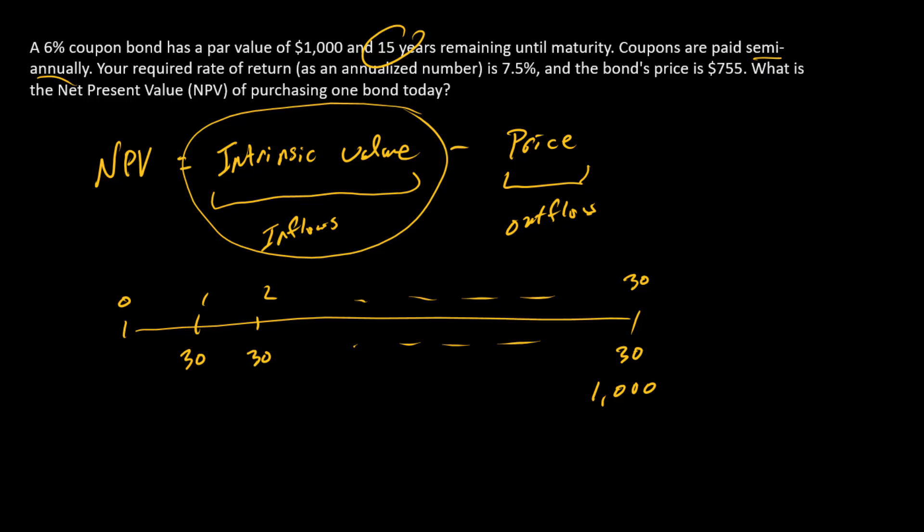We need a discount rate to find intrinsic value. I usually say yield to maturity, but here we're going to think about what you require as the investor, so your required rate of return. This is what you think the yield to maturity maybe should be. Your required rate of return or your discount rate is 7.5%, but since this is a semi-annual timeline, we're going to split that in half, so it's going to be 3.75% per six-month period.